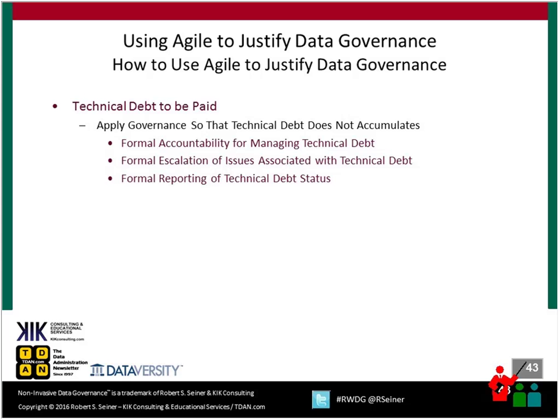Formal accountability for managing the technical debt might be a shared responsibility between agile teams and data governance teams. We want formal escalation processes to resolve technical debt issues in a timely manner without holding up agile delivery. We want formal reporting of the technical debt status — typically when the data governance team gets involved, they may take on responsibility for reporting what's on the technical debt list, how it's being addressed, and who has responsibility for addressing it.